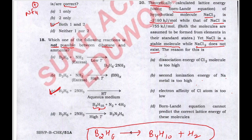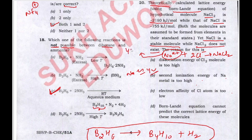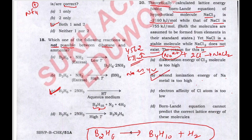To form NaCl2, we would need Na²⁺ and 2 Cl⁻. But to form Na²⁺, a very high second ionization energy is required — approximately 4562 kJ/mol — compared to only ~400 kJ/mol to form Na⁺. That is why the second ionization energy of sodium is too high, and NaCl2 does not exist. The correct answer is B.